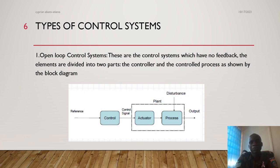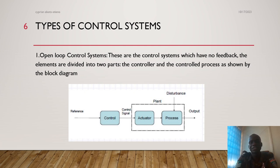Types of control systems: first, we have open loop control systems. These are control systems which have no feedback. The elements are divided into two parts — the controller and the control process — as shown in the diagram.